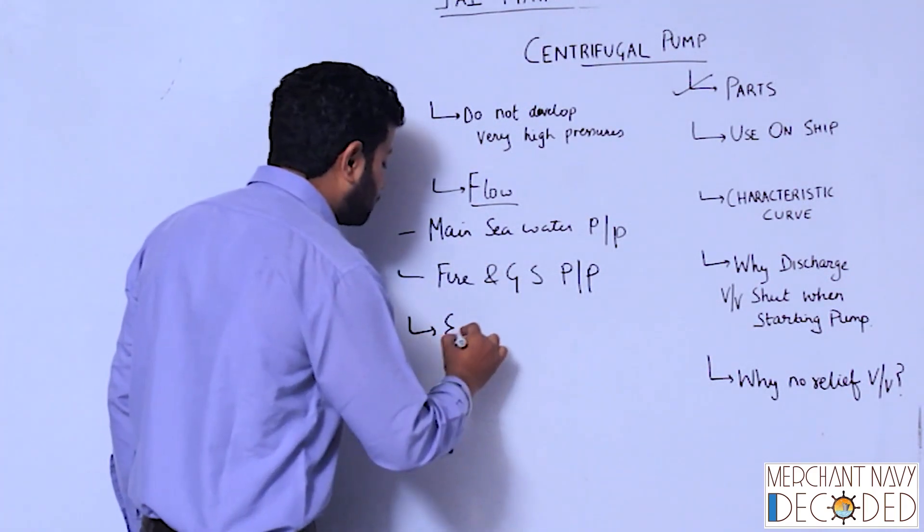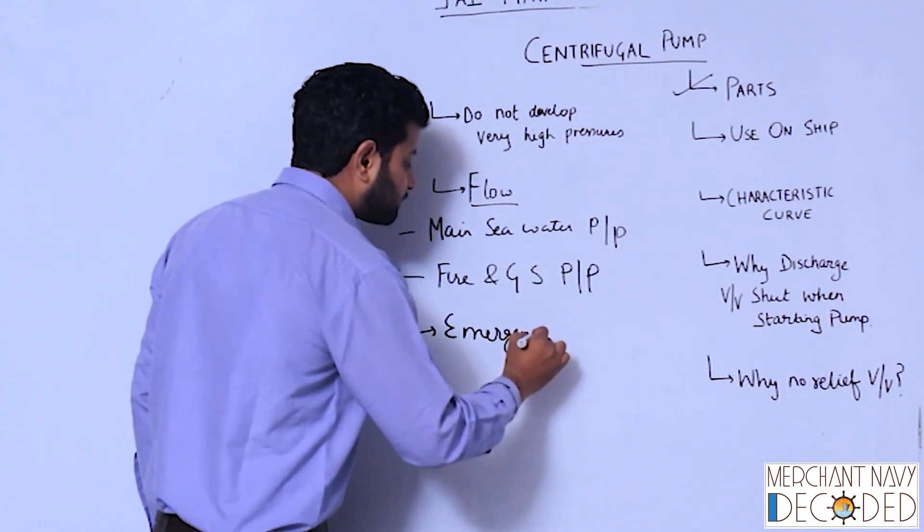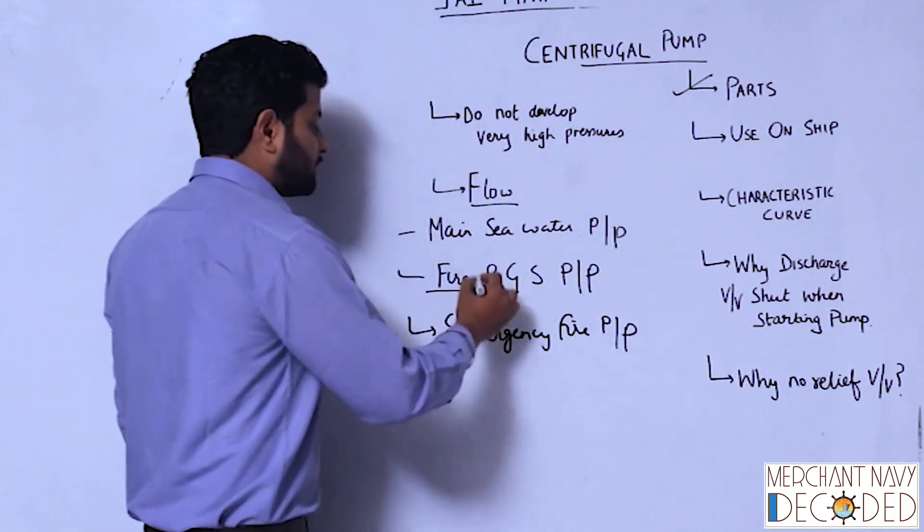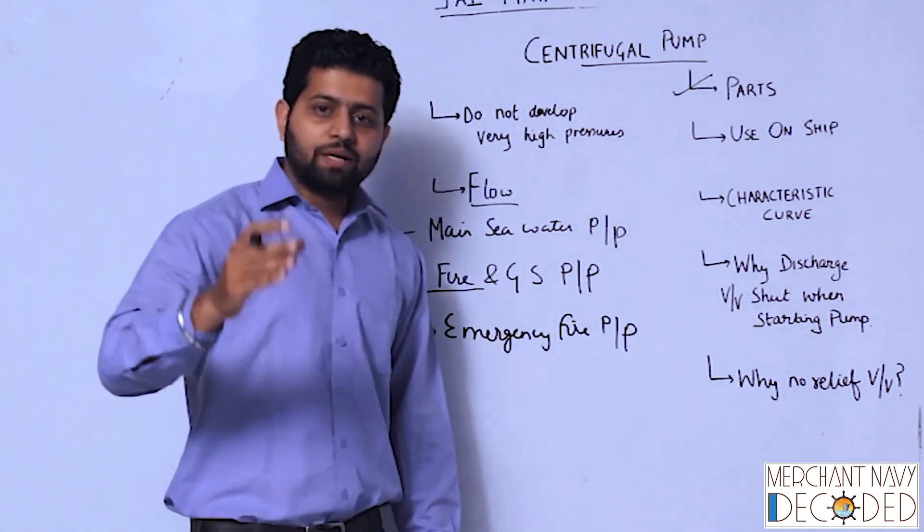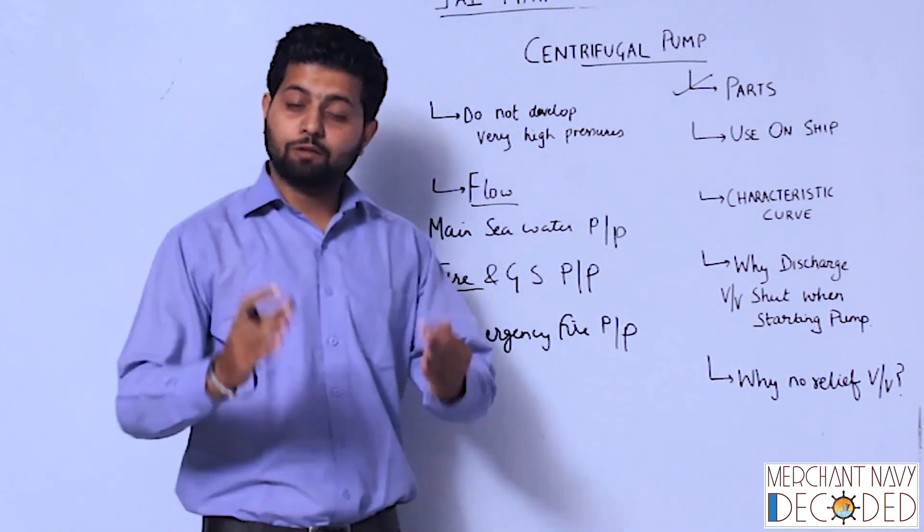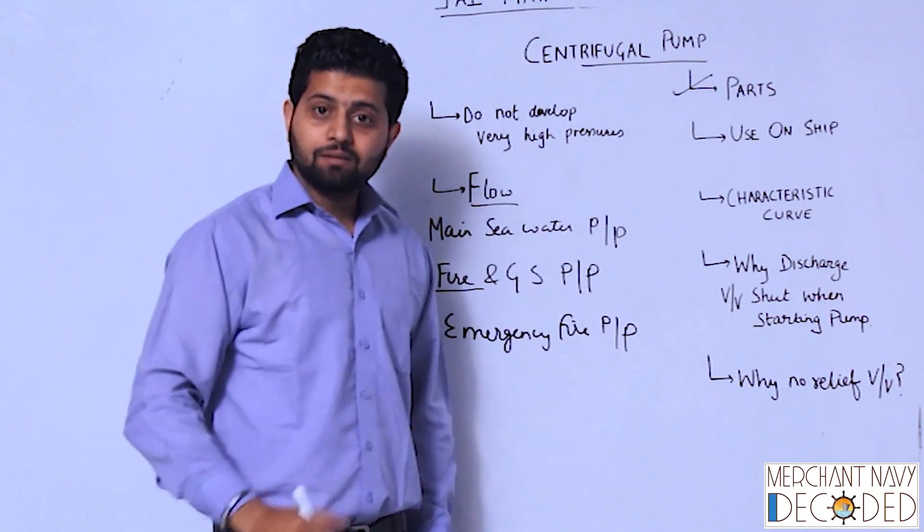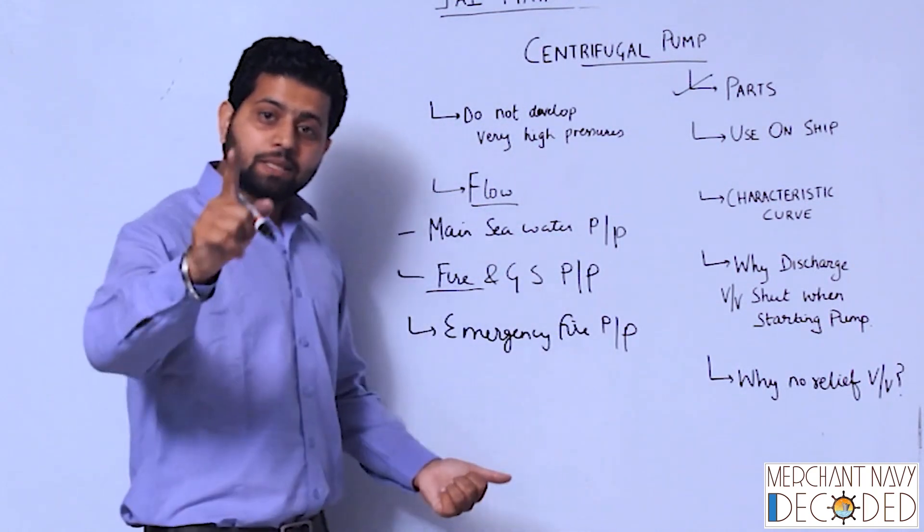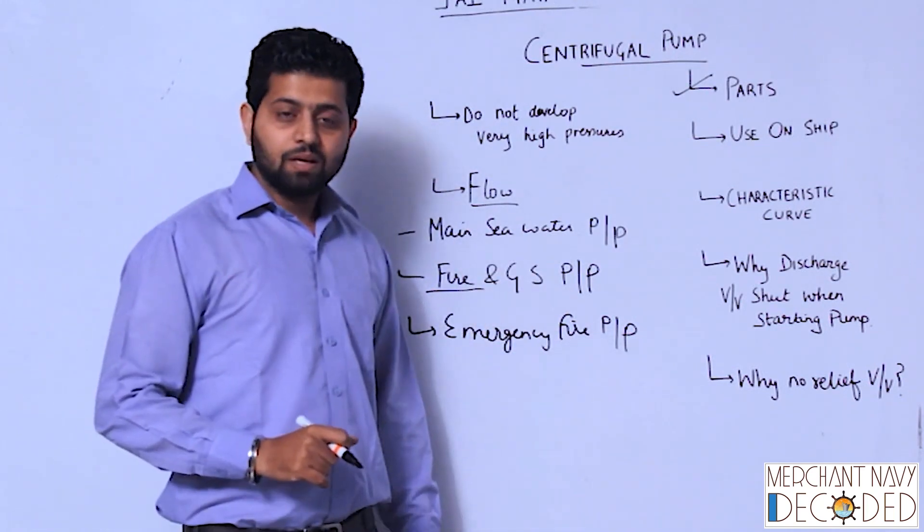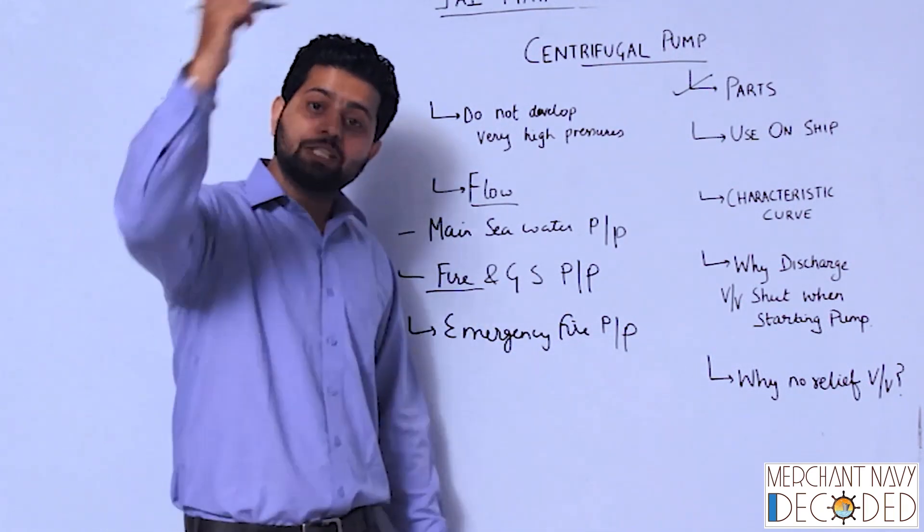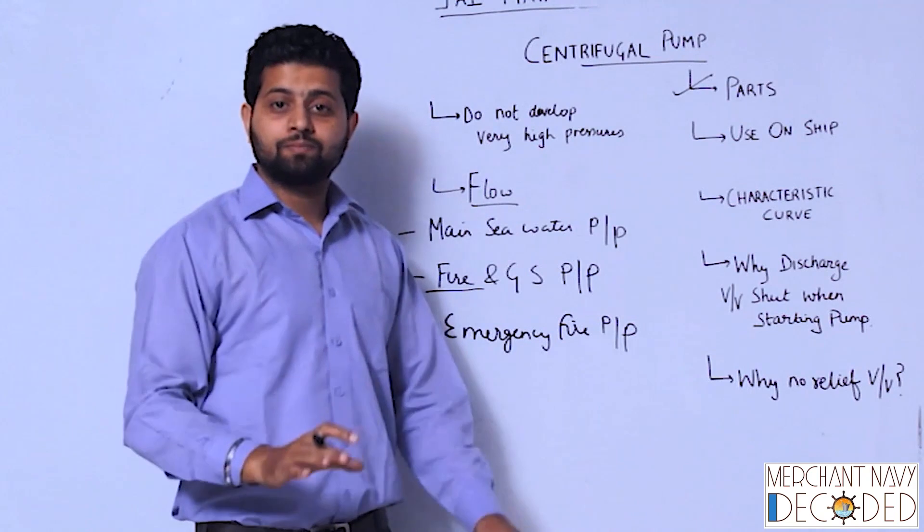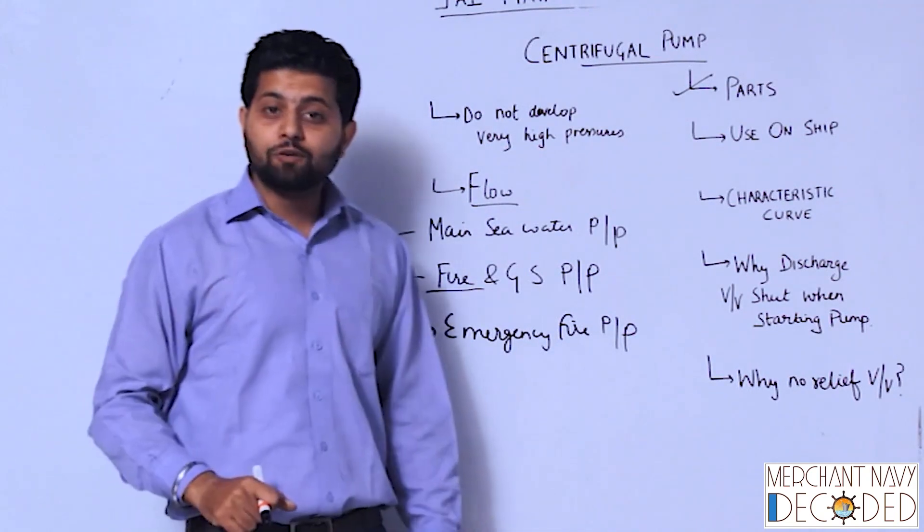Then emergency fire pump. What is this emergency fire pump? This fire pump is fitted in an engine room. But one day suppose engine room gets flooded and also there is a fire on deck. Now what will you do? You have to supply, at least you have to stop the fire. You cannot start this pump. So there is a separate pump which is called emergency fire pump fitted outside engine room. It has got supply from emergency generator, not from the main generator. We assume that we cannot enter the engine room. So this is also a centrifugal pump.